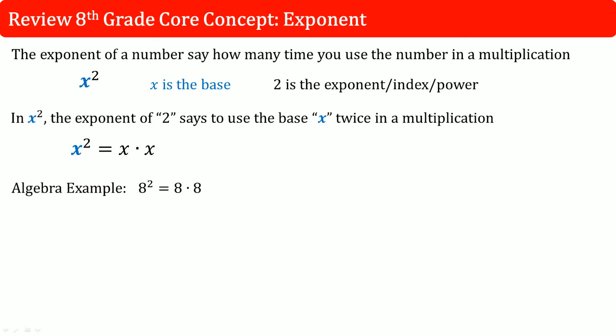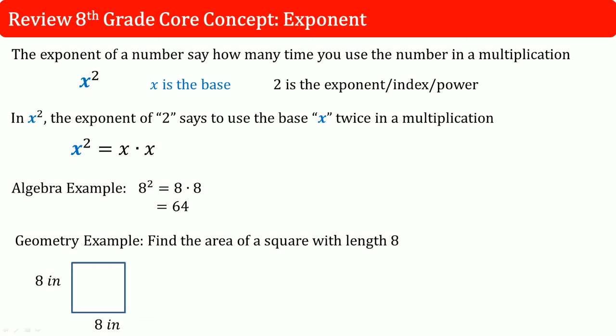We've seen this in algebra. 8 squared is equal to 8 times 8, which equals 64. Geometrically, it's like asking: find the area of a square with length 8. The formula for area is side squared. Plug in the side value of 8 inches — 8 squared is 64 inches squared. So the exponent, the squared, is referred to finding the area of a square.